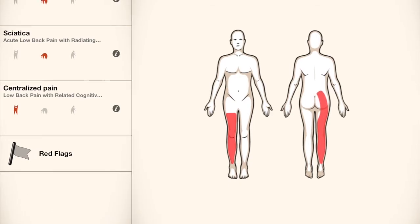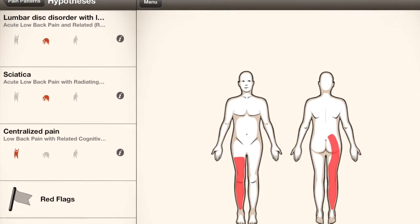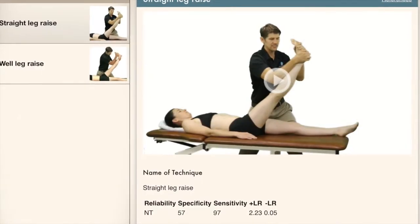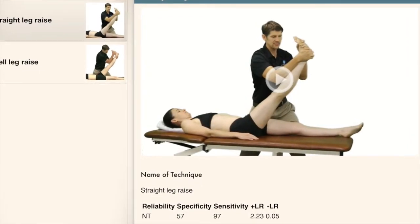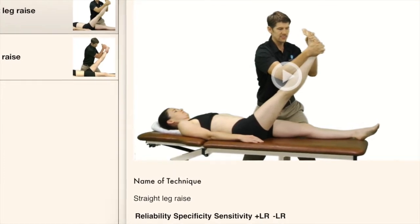I go through the different pain patterns by pretending a patient would come in and say they're having radiating back pain or related back pain. Based on that, I try to think about what pathologies they could have, and then what tests I would want to do and what tests I would want to rule in. I use the app to see if I've missed any test that would have strengthened my hypothesis.